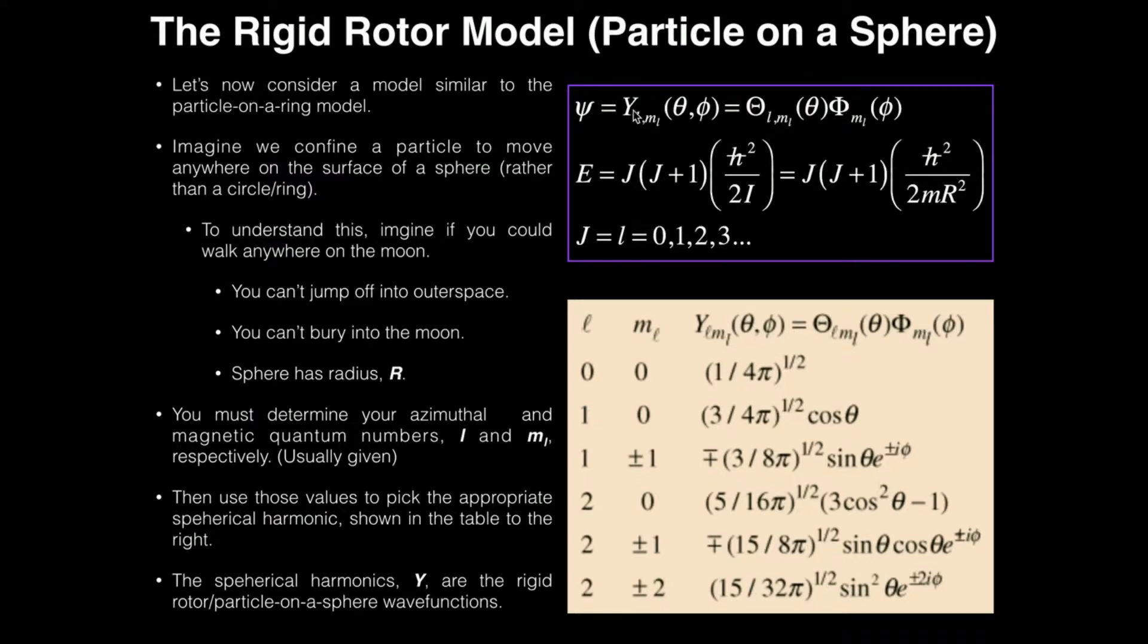And you will find these Y's tabulated usually in a table like this. So for example, if you had an azimuthal quantum number of one and a magnetic quantum number of zero, which would probably be given, then that means you're going to use this wave function. This is your wave function. It is 3 over 4 pi to the 1 half power times cosine of theta.